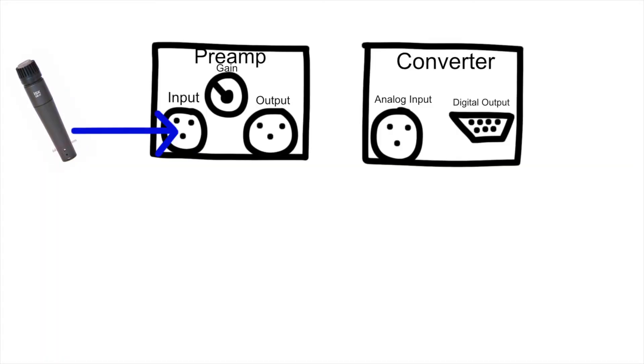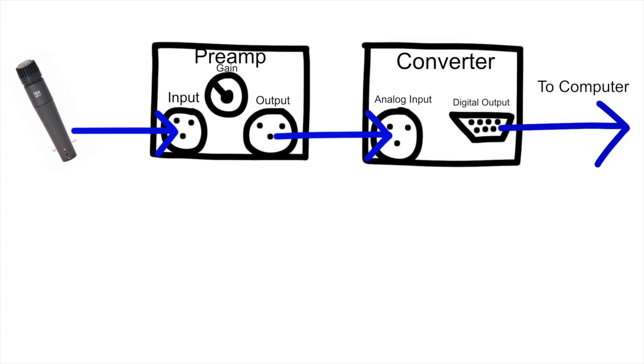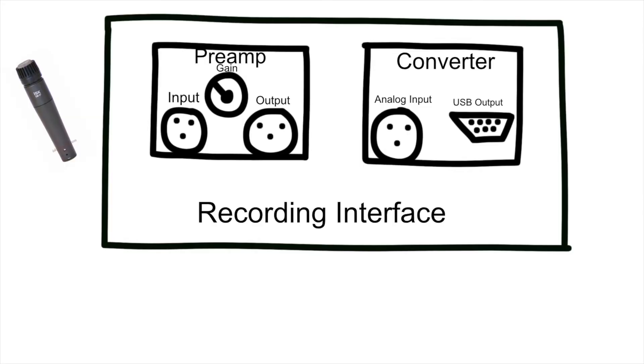Here's your typical recording chain. It starts with your microphone, then it goes to the preamp, then the converter, and then into the computer for processing. Many recording interfaces streamline this process by having the preamp and converter all built into one box — you just plug the microphone into it and it sends the signal out to the computer through a USB cable or whatever type of cable it's connected with.